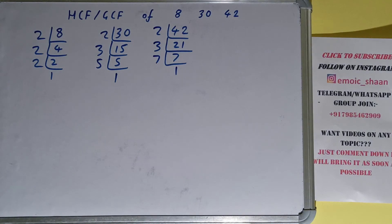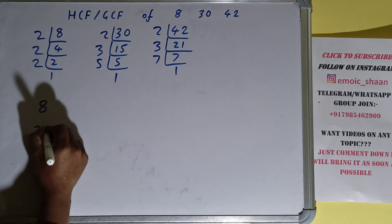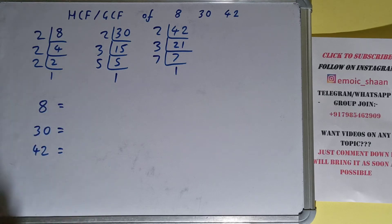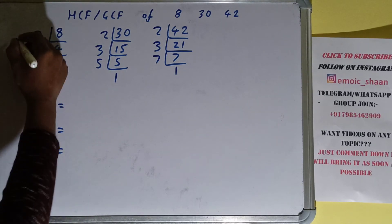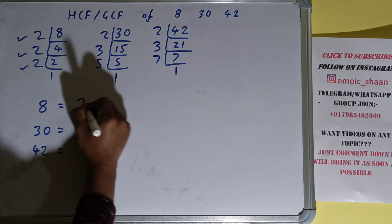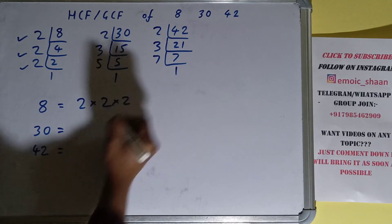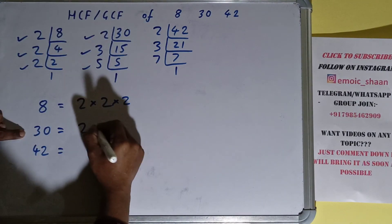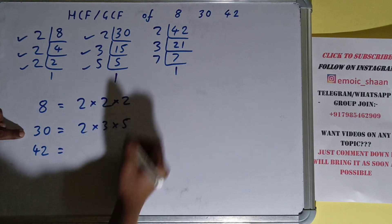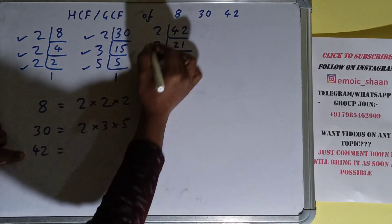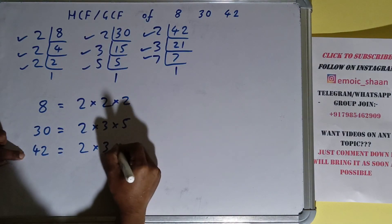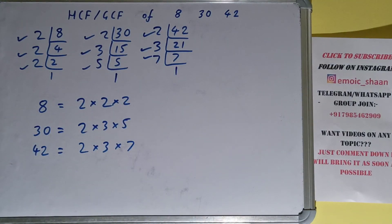When we do so we'll get 1. So we are done with the prime factorization step. The next thing we need to do is write down each of the numbers with their respective prime factors. For 8, we got 2 × 2 × 2. For 30, we got 2 × 3 × 5. For 42, we got 2 × 3 × 7.